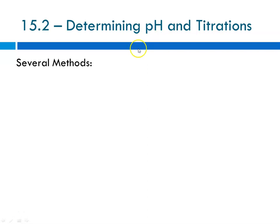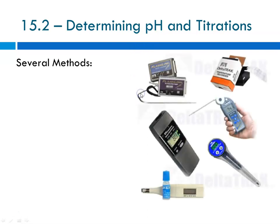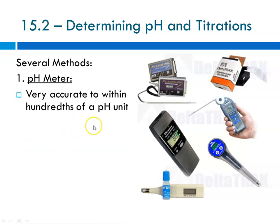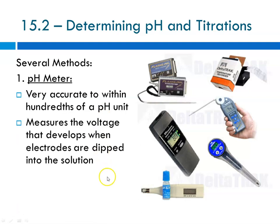To determine the pH, there are several methods. Typically, we use some sort of a meter — a pH meter — that's the first method, or the method of choice. It's very accurate to within hundredths of a pH unit, and it measures the voltage that develops when electrodes are dipped into solution. These electrodes are sensitive to the free ions present when acids and bases are in aqueous solution.